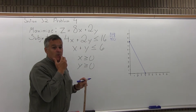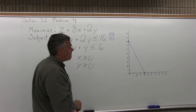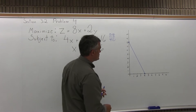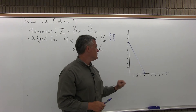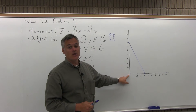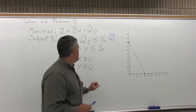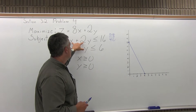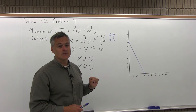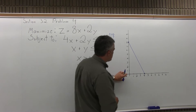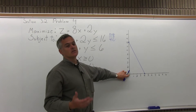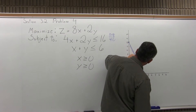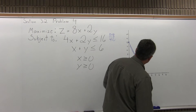Now I have to determine where to shade — above that line or below? The way to determine that is to choose a test point that's not on the line. Use (0, 0) if you can. So (0, 0) is not on the line — that will be my test point. Put 0 for x and 0 for y into the linear inequality, and you get 0 is less than 16. That's true, so the test point was on the underneath side, meaning the underneath side is the shaded side.